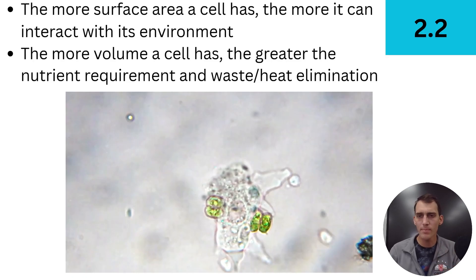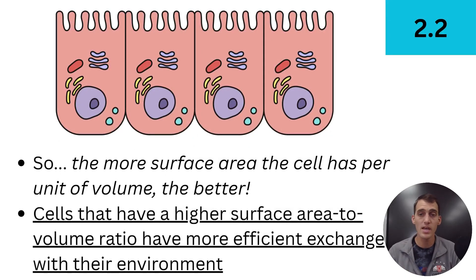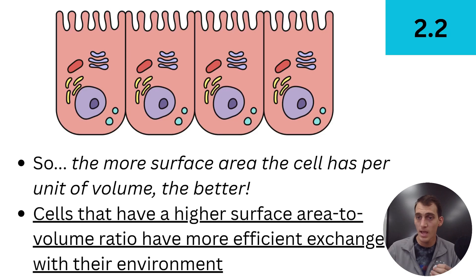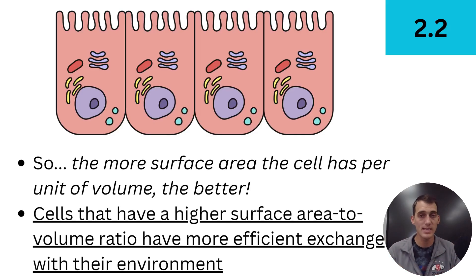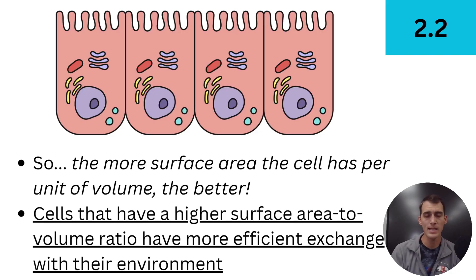So what are we picking up about surface area and volume? Here's one of the bottom lines: the more surface area a cell has per unit of volume, the better. Surface area makes it easier to exchange with the environment. And the less volume it has, the less it requires in terms of nutrients, waste, and heat dissipation. Cells that have a higher surface area to volume ratio have a more efficient exchange with their environment. So it is better to have a high surface area to volume ratio if you are a cell.